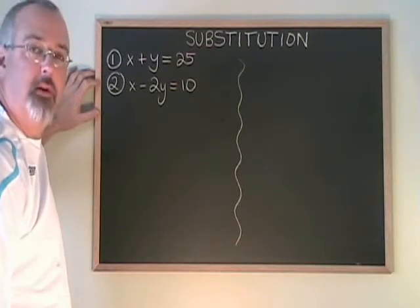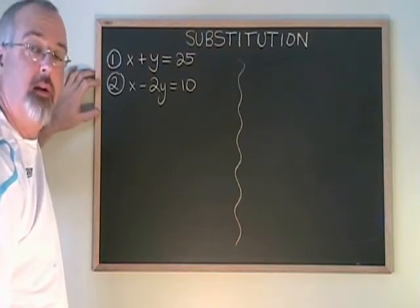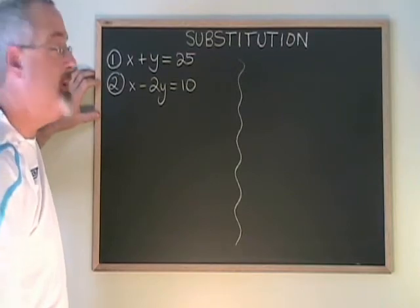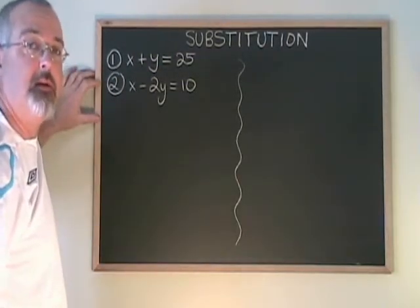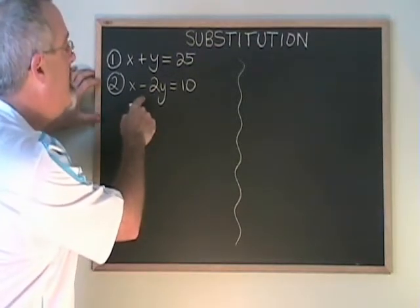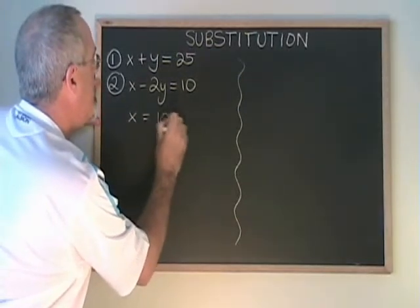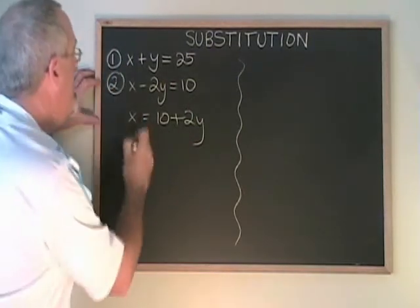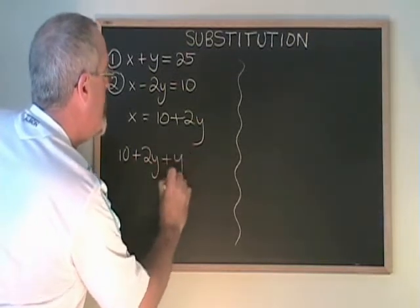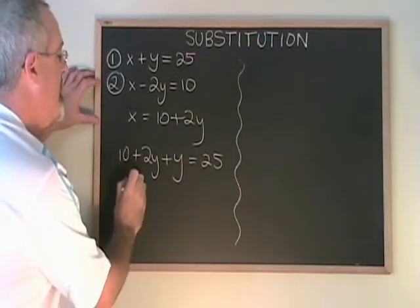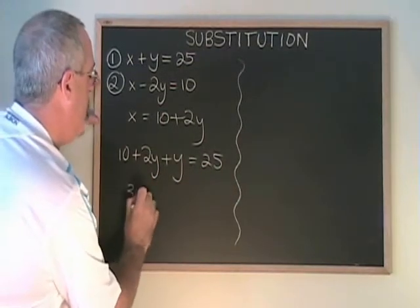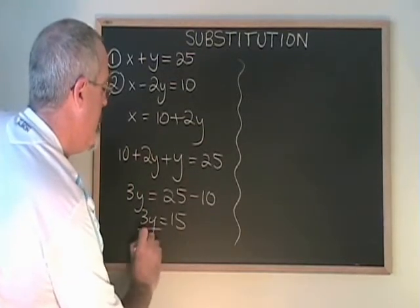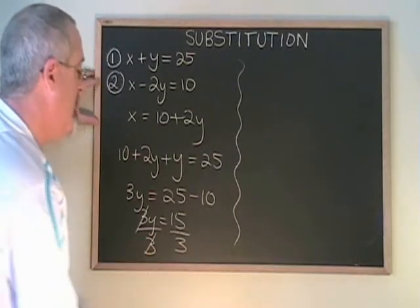Now I'm going to do the third example over again, but instead of isolating the y, I'm going to isolate the x. We don't have to always isolate the y when we're doing substitution. We can isolate either letter in either equation and it will work and give the same answer. Let's prove it. If we isolate the x in equation 2, we get x equals 10 plus 2y. Then we substitute 10 plus 2y into the x position in the other equation, and we have 10 plus 2y plus y equals 25. Moving the 10 to the other side and combining the y's, I get 3y equals 25 minus 10. 3y equals 15, and if I isolate the y by dividing both sides by 3, I get y equals 5.